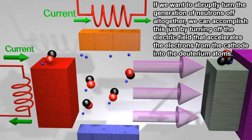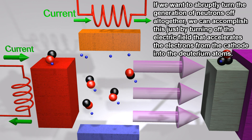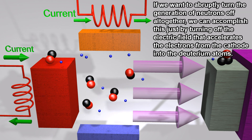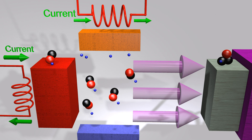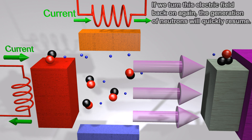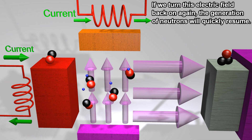If we want to abruptly turn the generation of neutrons off altogether, we can accomplish this just by turning off the electric field that accelerates the electrons from the cathode into the deuterium atoms. If we turn this electric field back on again, the generation of neutrons will quickly resume.